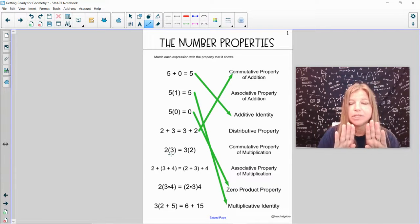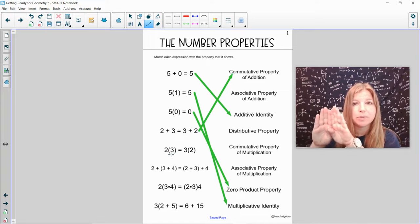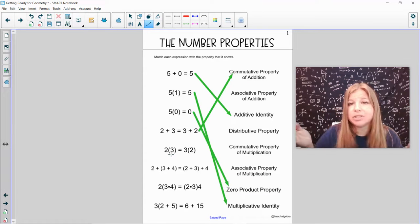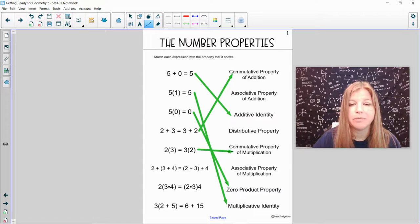2 times 3 equals 3 times 2. The same is also true for multiplication. Side by side means they multiply. It does not matter what order we multiply in. 2 times 3 is equal to 3 times 2. They're both equal to 6. That's my commutative property of multiplication.